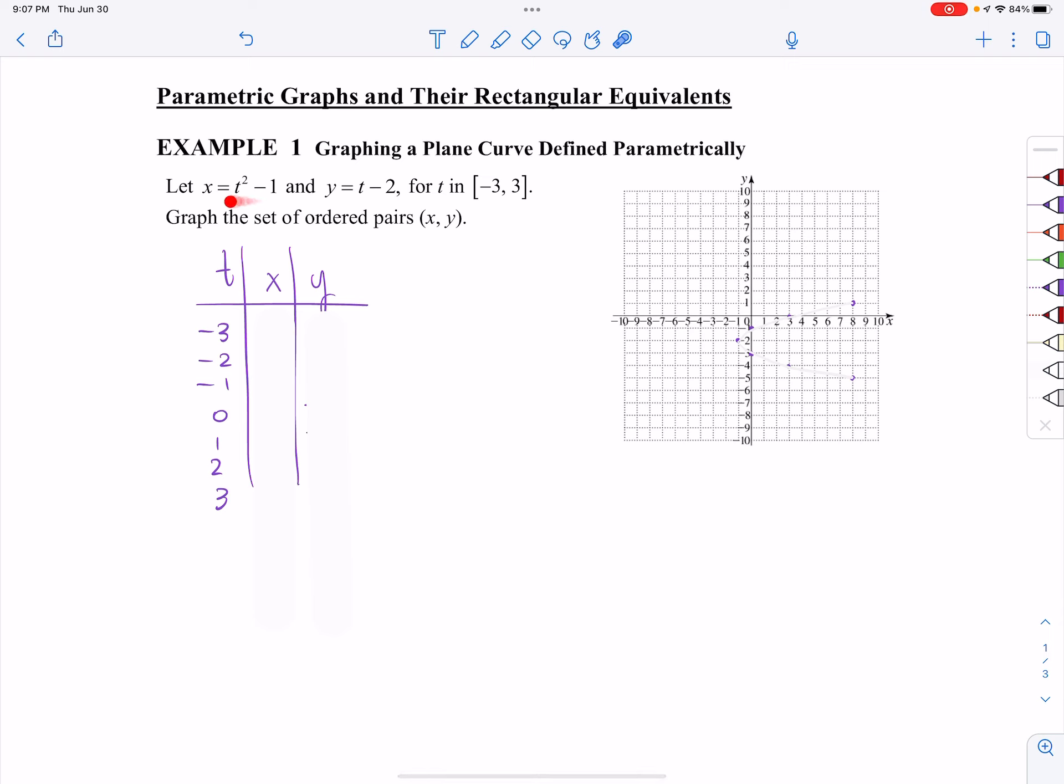We've got x equaling t squared minus 1, y equals t minus 2. t is in the interval from negative 3 to 3, so it cannot go outside of that interval. And then we're going to be asked to graph the set of ordered pairs x, y.